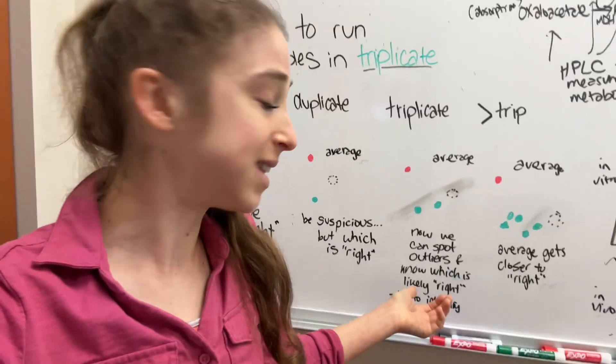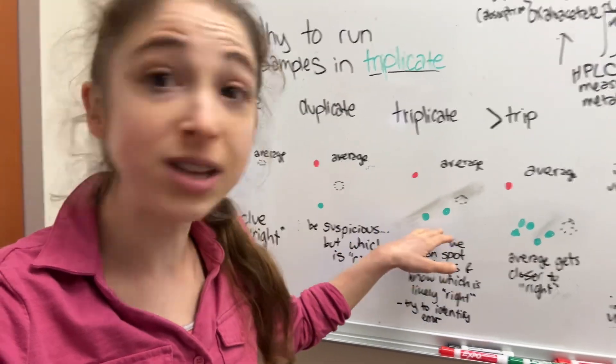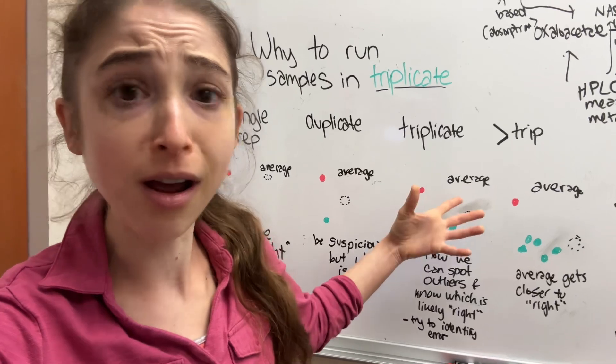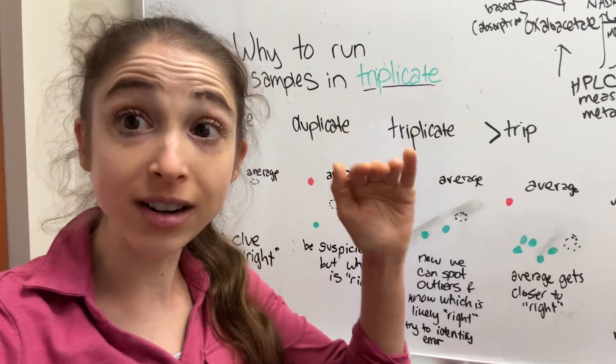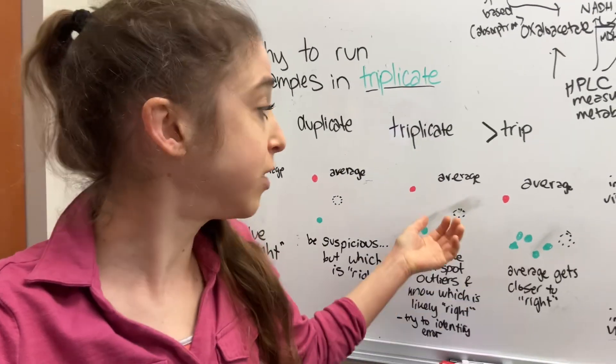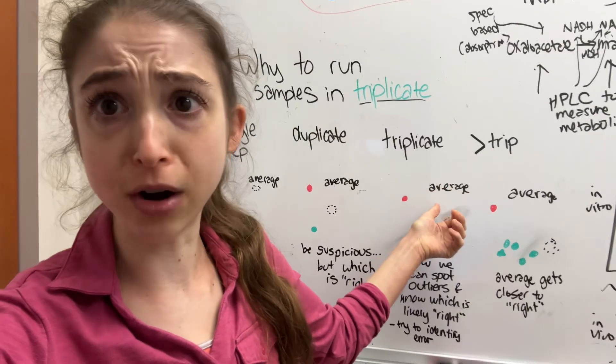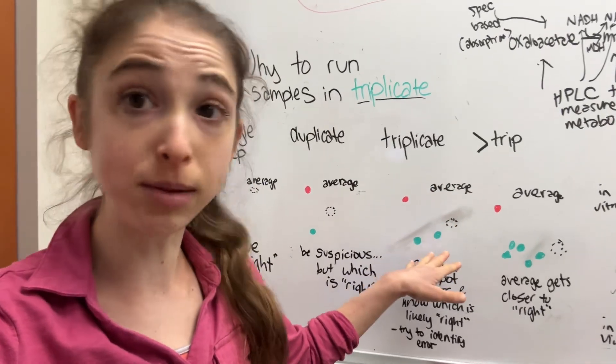And so basically, now you can say, okay, well, two of these values are like this one, and this one is off. So the average is going to start getting closer to the real one. And you can see something might have gone wrong in this one sample, and these are probably more trustworthy.